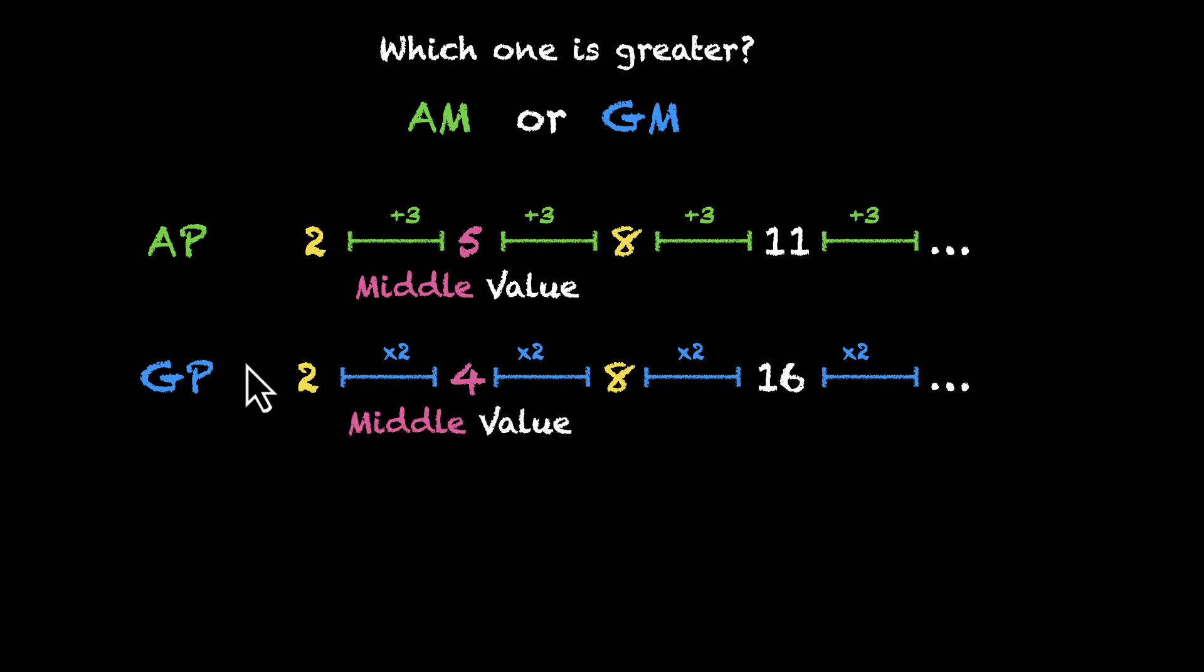So in this example, arithmetic mean of 2 and 8 is 5, and the geometric mean of the same two numbers is 4. And 5 is bigger than 4. So we can say that in this example at least, arithmetic mean is greater than geometric mean.